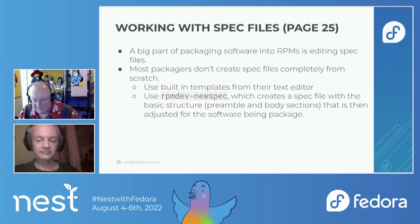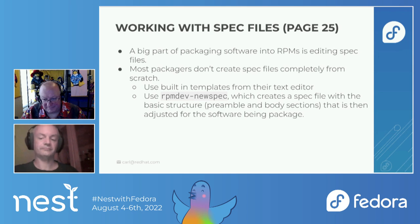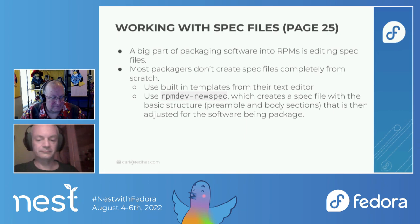Working with spec files: most packagers don't create spec files completely from scratch. We use built-in templates from a text editor, or there's a command from RPMDevTools called RPMDev-NewSpec that creates a skeleton spec file with preamble and body sections. It won't be valid from the get-go — empty sections need to be filled out and some lines you don't need can be removed. There's nothing wrong with writing a spec file from scratch, but there are faster ways.